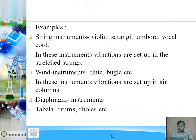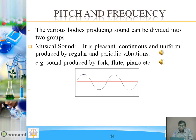Wind instruments such as flute, bugle, etc., produce sound through vibrations set up in air columns. Diaphragm instruments such as tabla, drums, and dholak produce sound through vibrating diaphragms.